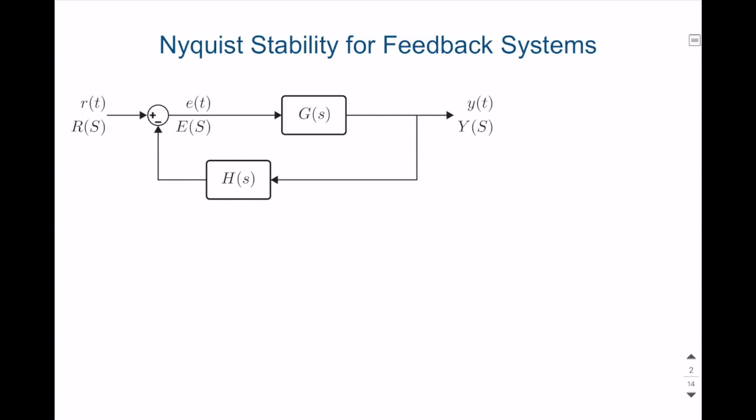In the literature, Nyquist Stability is dominantly applied for analyzing feedback control systems. For this reason, specifically this semester, we will not talk about how we can apply Nyquist Stability for Feedforward or Open-Loop Systems. So this is a given classical feedback topology and let's analyze its closed-loop transfer function.